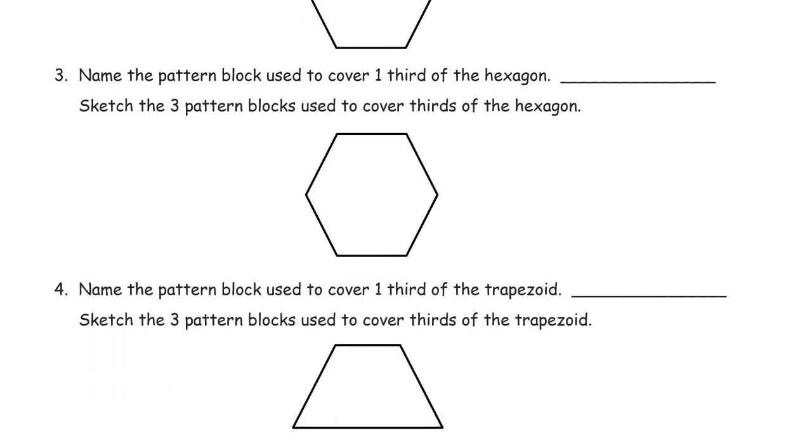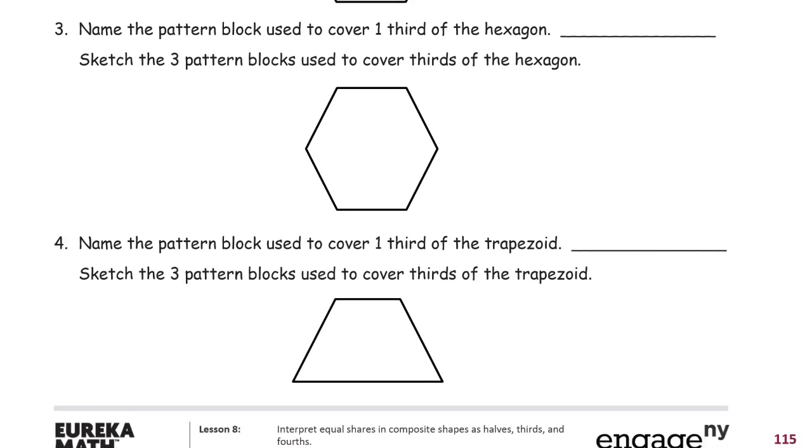And then name the pattern block used to cover a third of the hexagon. So that's the middle of the hexagon. This is how I draw it. You find a spot that's right in the middle of the hexagon, the very center of it. And then you connect to it every other corner.